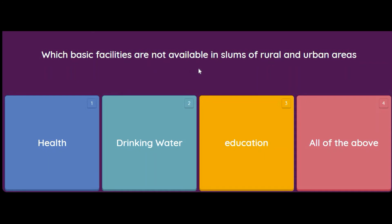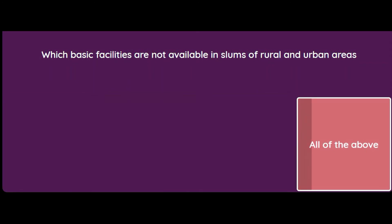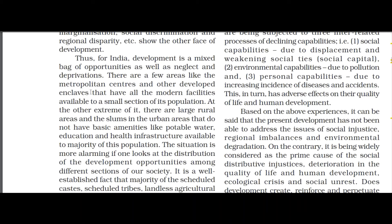Which basic facilities are not available in slums in rural and urban areas — health, drinking water, education, or all of the above? The answer is all of the above. Referring to the book: for India, development is a mixed bag of opportunities as well as neglect and deprivations. Metropolitan centers have all modern facilities available to a small section of the population, while at the other extreme, large rural areas and urban slums do not have basic amenities like potable water, education, and health infrastructure available to the majority.